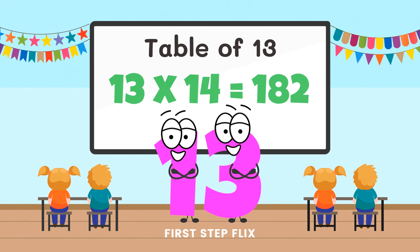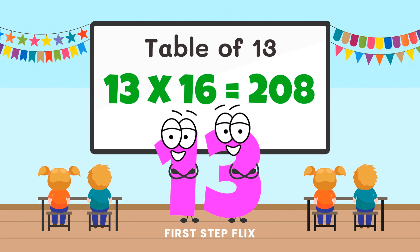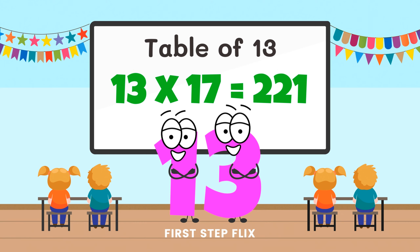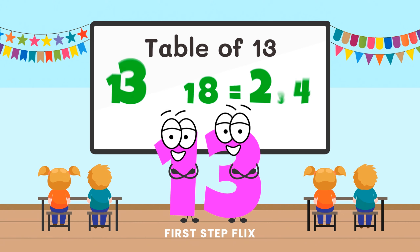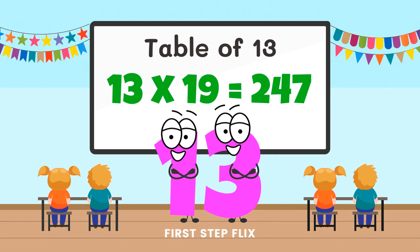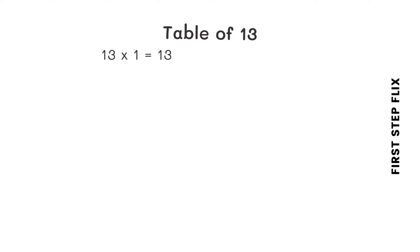13 fifteens are 195. 13 sixteens are 208. 13 seventeens are 221. 13 eighteens are 234. 13 nineteens are 247. 13 twenties are 260. Let's repeat one more time.